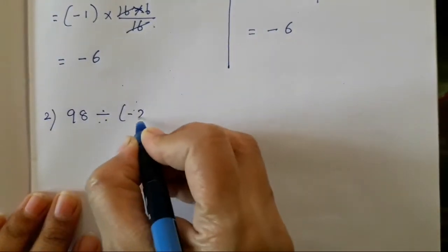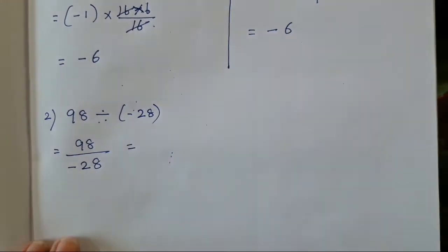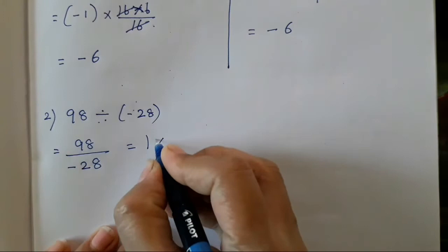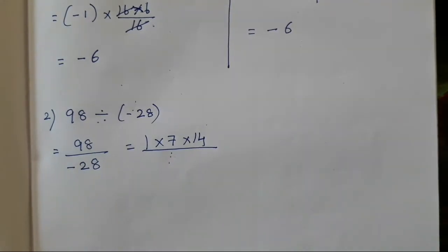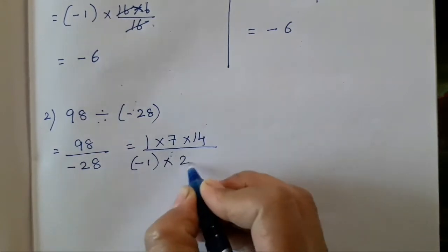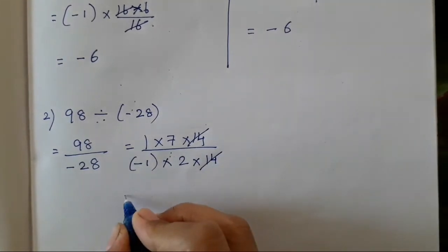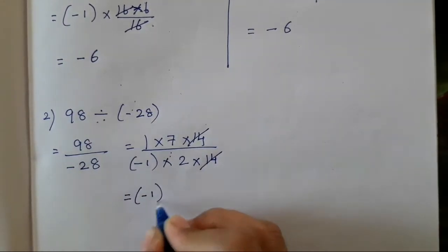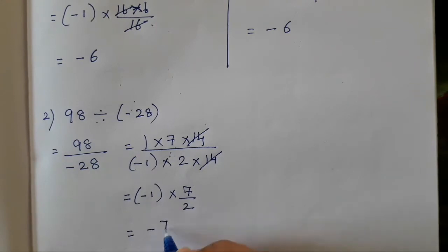The second sum is 98 divided with minus 28. We will write it in division form first — 98 and minus 28. We will find all the factors of 98 first, that is 1 into 7 into 14. When you multiply it, you are going to get 98. You can do it with factorization also. Now for 28 with minus sign, you have to take minus 1 into 2 into 14. You have to find such numbers which can get reduced. 14 and 14 is going to get reduced. What is left? Minus 1 into 7 upon 2. So the answer is going to be minus 7 upon 2.